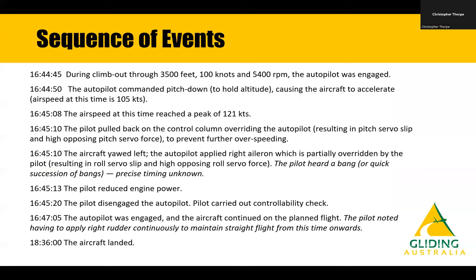A quick sequence of events: the take-off was late in the afternoon, it was a thermalling day. The autopilot is very simple — it holds altitude and sets a track. There is an ability in the autopilot to define a maximum speed, and once it reaches that maximum speed it will commence a pull-up, but that maximum speed was not set. The peak airspeed was 121 knots. VNE is 120. The ASI underreads by approximately 4 knots at this speed, so it's likely to be in the order of 125 knots calibrated airspeed.